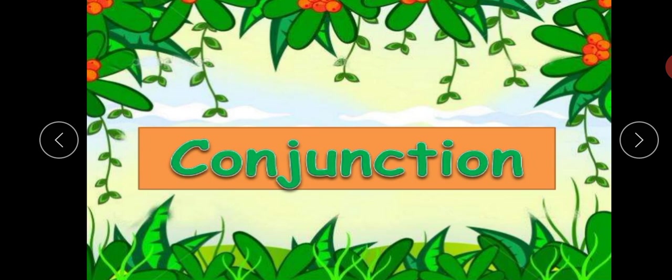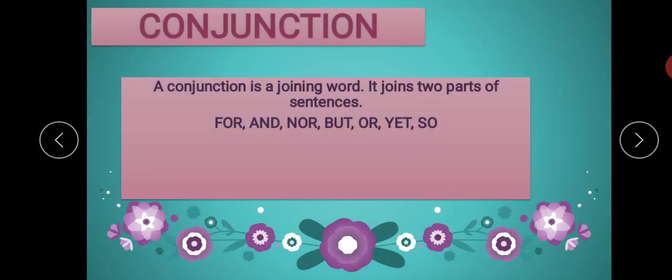Now let me discuss what a conjunction is. A conjunction is a joining word. It joins two parts of sentences. Yeh do parts of sentence ko join karta hai. Conjunction is a joining word — it joins two parts of sentences.